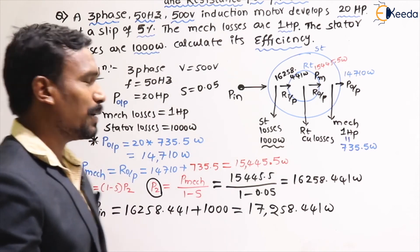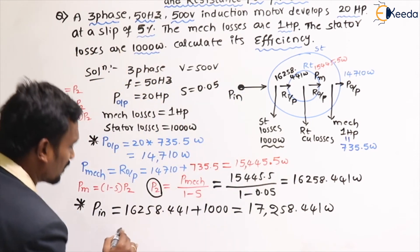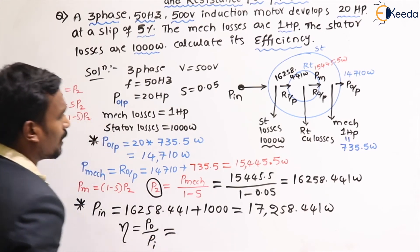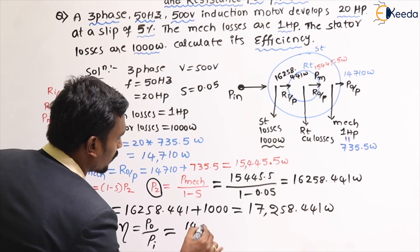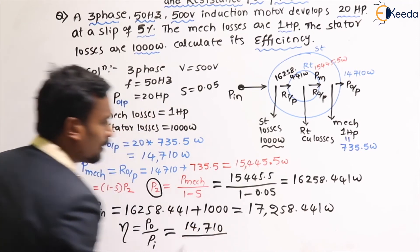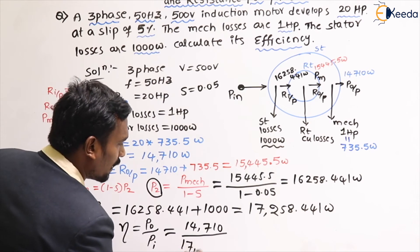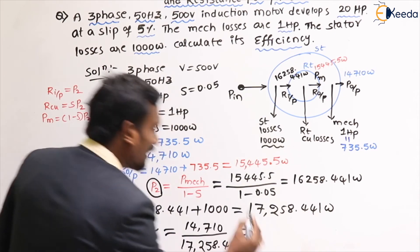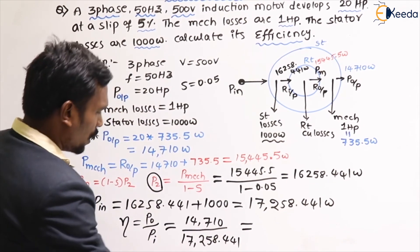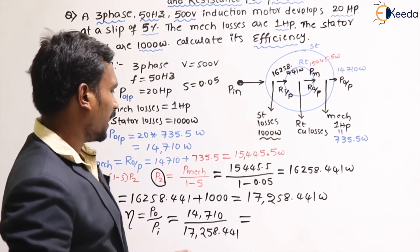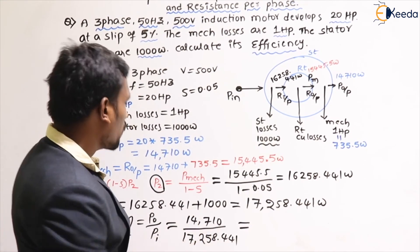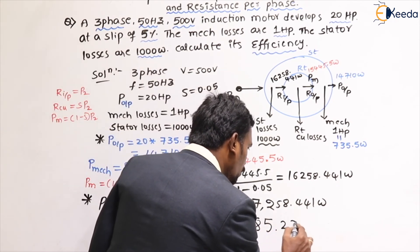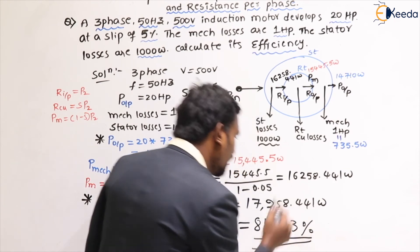Now we calculate efficiency. Efficiency = power output ÷ power input = 14,710 ÷ 17,258.41. If you calculate this, you get approximately 85.23%. So the efficiency of the machine is 85.23%.